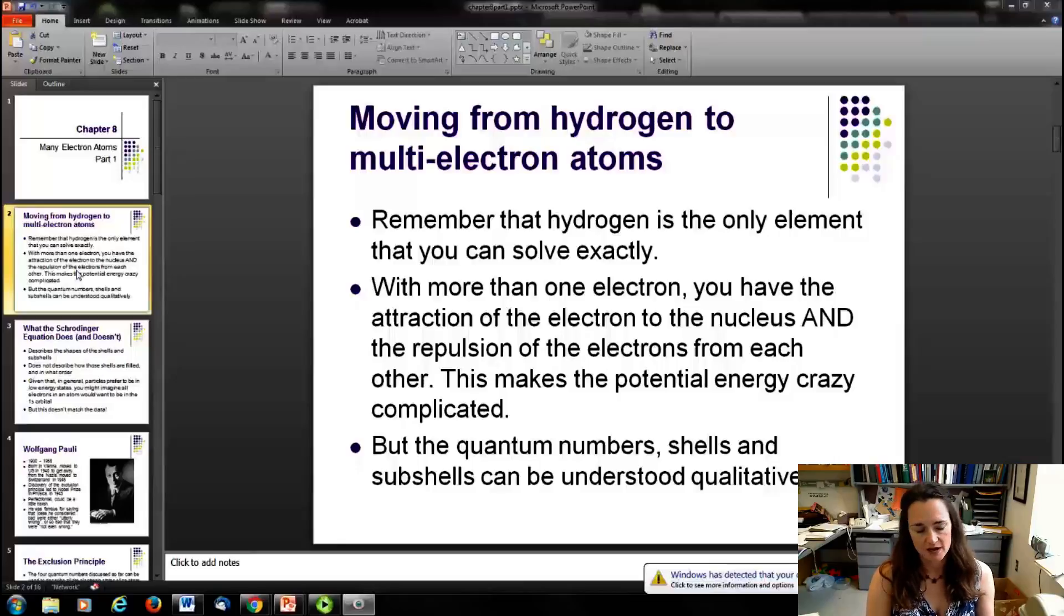The good news is that what we solved for with the Schrödinger equation already, giving us the orbitals and the shapes of the orbitals for the simple hydrogen atom solution, actually does a pretty good job of describing what's going on with multi-electron atoms. And so we have a strong theoretical basis and understanding as we move forward.